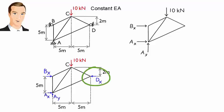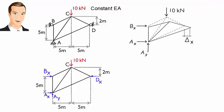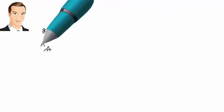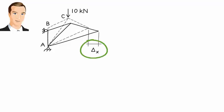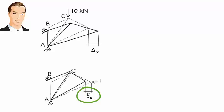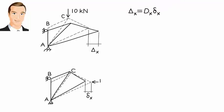But when the redundant force, labeled dx, is removed, the joint is going to move horizontally by some amount. Let's denote this displacement as delta x. Then the redundant force dx is what we need to push joint D back into place. In order to find this force, we need to calculate two displacements: delta x, the horizontal displacement at joint D under the applied load, and lowercase delta x, the horizontal displacement at D due to a unit load applied in the direction of dx. Then we can write the compatibility equation as delta x equals dx times lowercase delta x. Let's use the virtual work method to calculate the two displacements.